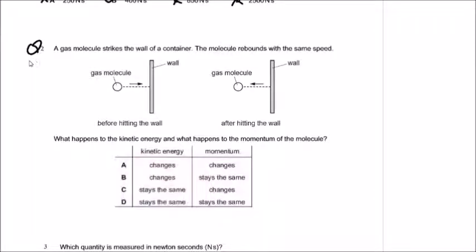Question number two. A gas molecule strikes the wall of a container and rebounds with the same speed, as shown in the diagram. What happens to the kinetic energy and what happens to the momentum of the molecule?